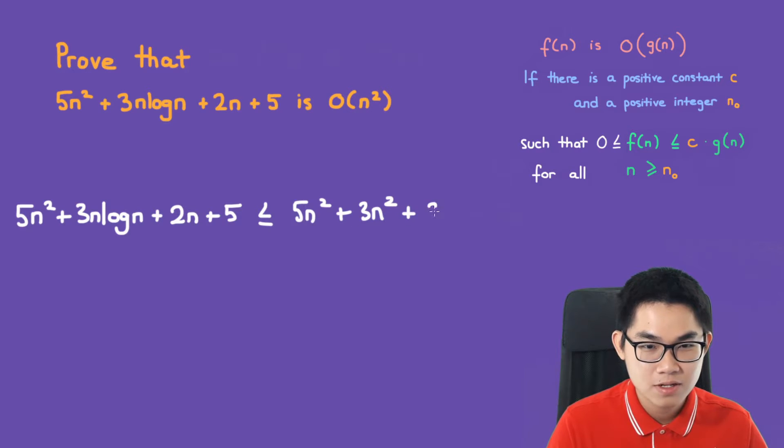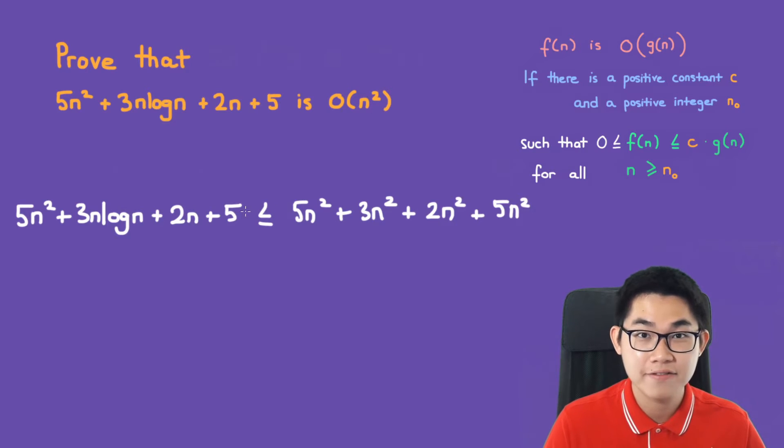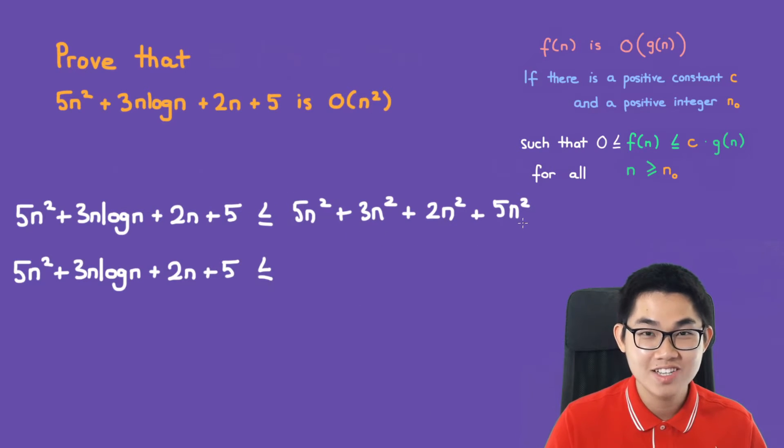Then plus 2n squared. So this right here makes sense because 2n squared is larger than 2n, and also 5n squared is larger than 5. Adding all the constants on the right side, we have 5 plus 3 plus 2 plus 5, which is 15n squared.